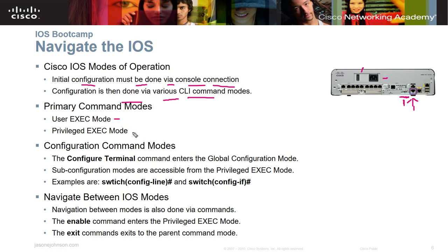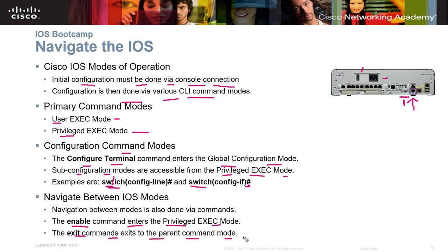The primary command modes are either user exec mode or privileged exec mode. You need to know the difference between them and how to get to each one as you work through this course. The configure terminal command enters global configuration mode. Sub-configuration modes are accessible through the privileged exec mode. The enable command enters privileged exec mode, and the exit command exits back to the parent command mode. Repeatedly pressing exit will bring you back to the login screen.